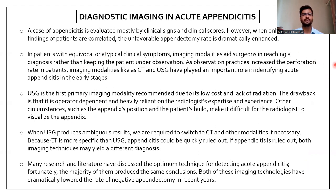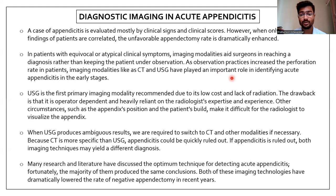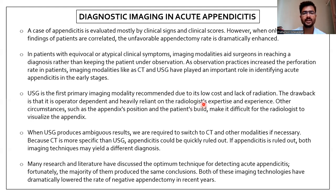Appendicitis is mostly evaluated by clinical signs and clinical scores. However, when clinical findings are correlated, favorable appendectomy rates are dramatically enhanced. In patients with equivocal or atypical clinical symptoms, imaging modalities aid the surgeon in reaching a diagnosis rather than keeping the patient under observation. CT and USG have played an important role in identifying acute appendicitis in the early stage. USG is the primary modality as it is low cost and lacks radiation, but its drawback is that it is heavily operator dependent and based on radiologist expertise.